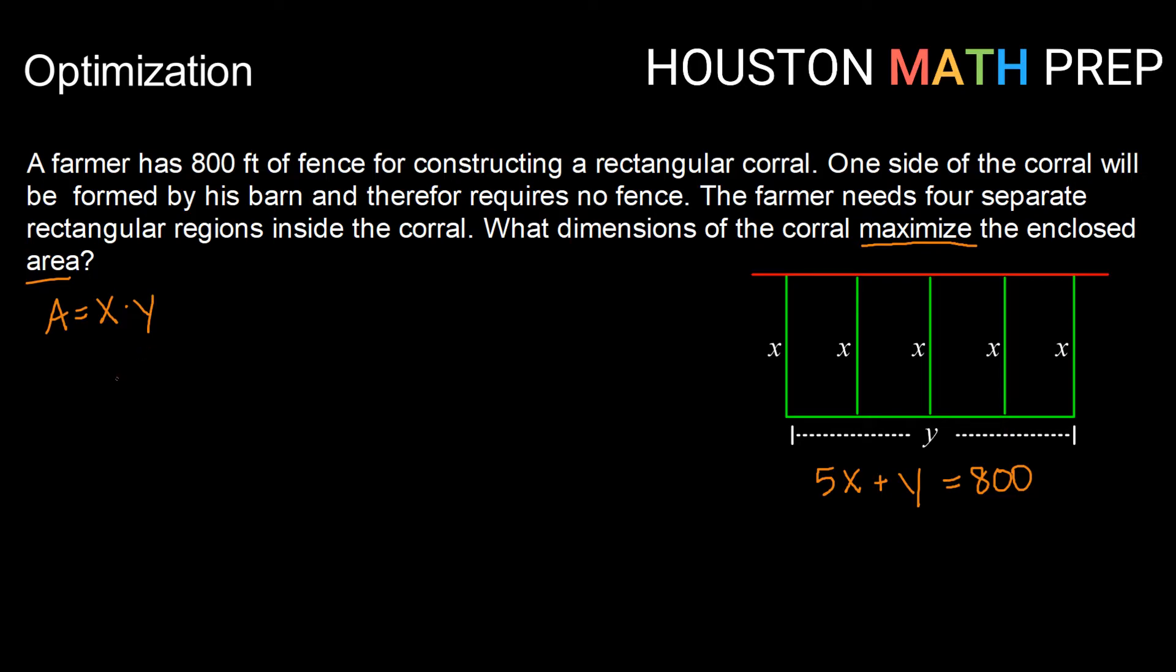So this is what we're going to want to find the maximum of. Now we want to make this area formula in terms of only one variable, x or y. It's really your choice which variable you want to use there. And we're going to use our constraint function to replace one of these variables. So when I look at my constraint function, I see that it's going to be a bit easier for me to solve that constraint function for y.